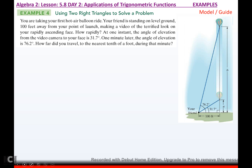Now we have double-triangle problems. You're in a hot air balloon launching from a point with your friend standing 100 feet away. At one instant, the angle of elevation from the camera to your face is 31.7 degrees. Looking at the small blue triangle, set up tan(31.7) equals A over 100. One minute later, the angle of elevation has risen to 76.2 degrees, and your balloon is much higher.